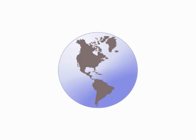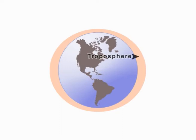The air around us makes up the lowest layer of the Earth's atmosphere, called the troposphere, which is about 7 km thick at the poles and 17 km thick at the equator.